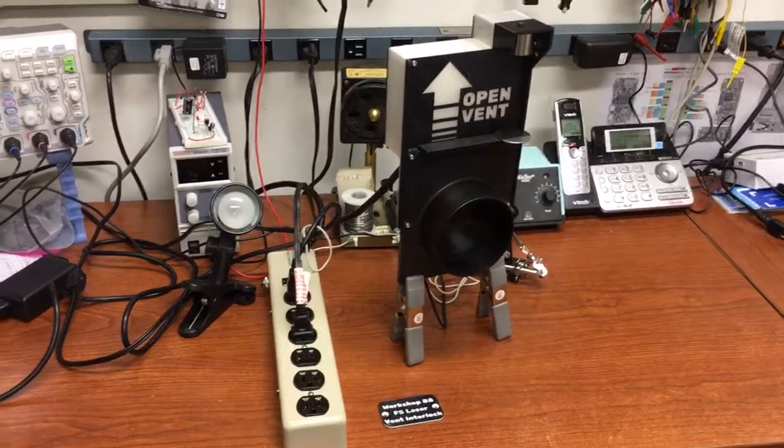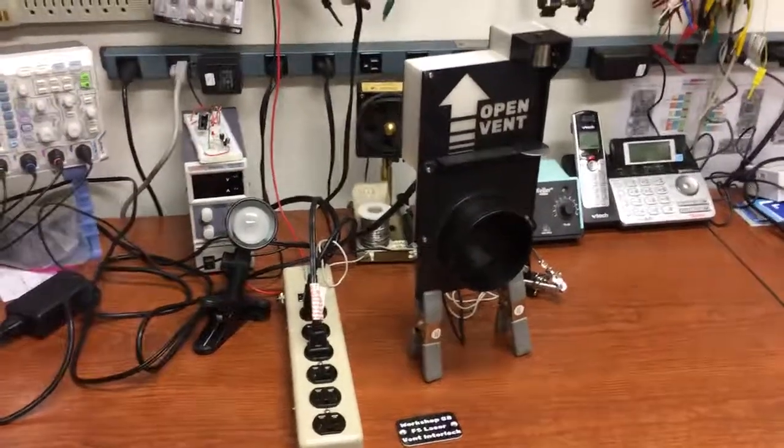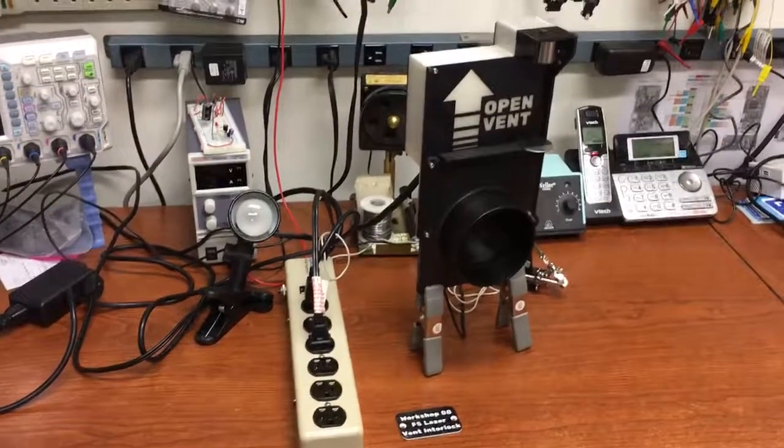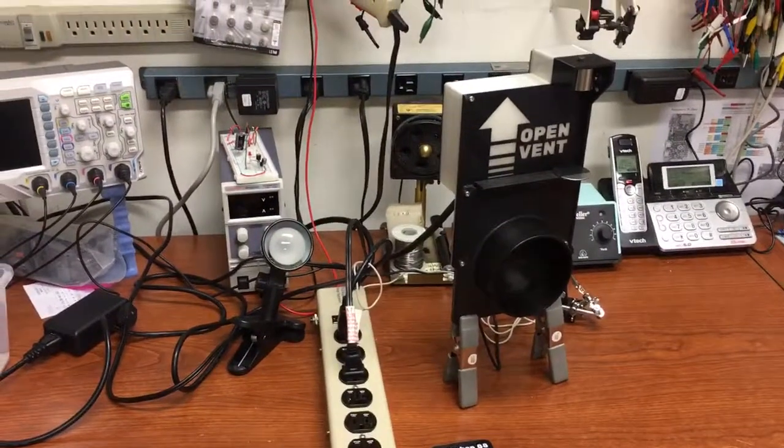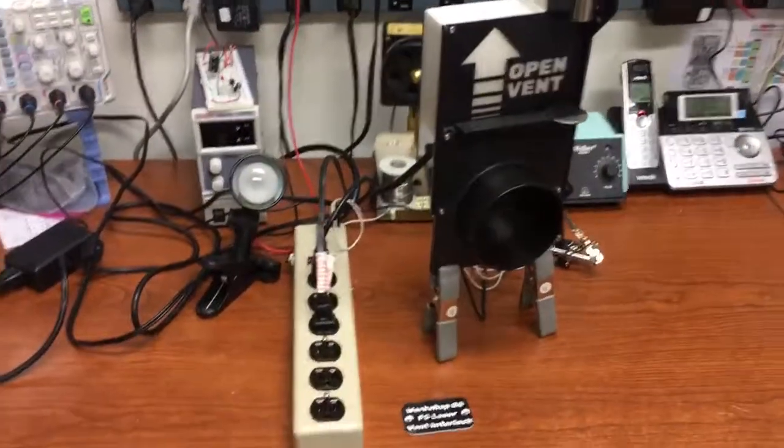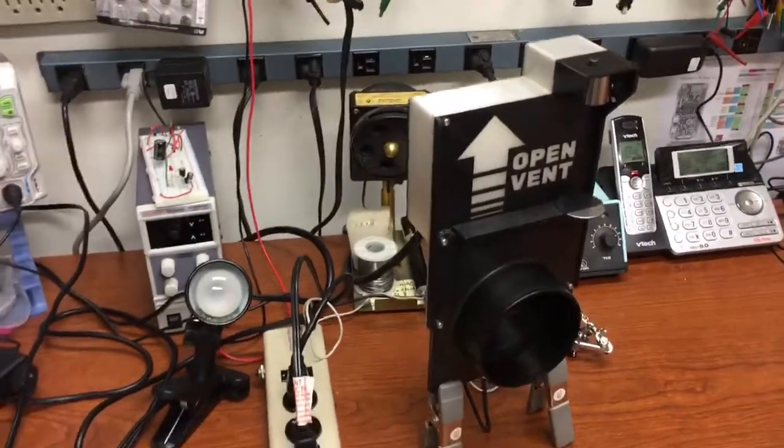Hey, this is the new blast gate interlock for the laser at Workshop 88. It keeps the laser from being run while the vent is closed and always closes the vent when the laser is powered off, even in the event of a power outage.